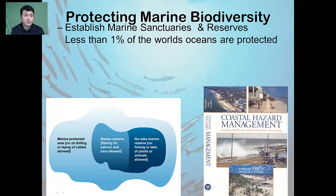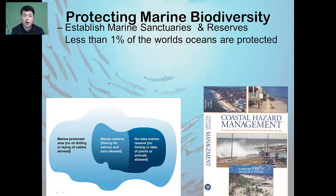Another way that we can protect marine biodiversity is through the establishment of marine sanctuaries and reserves. In 2006, President Bush established the world's largest marine sanctuary in the northwestern Hawaiian Islands, including 195,000 square miles of coral reefs, underwater volcanoes, rare fish, and unique habitats. Despite this, less than 1% of the world's oceans are actually protected.